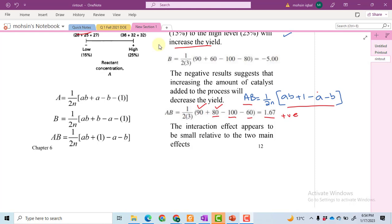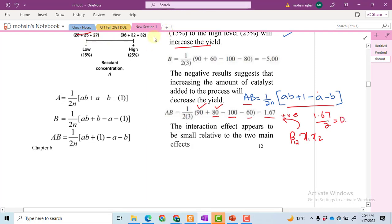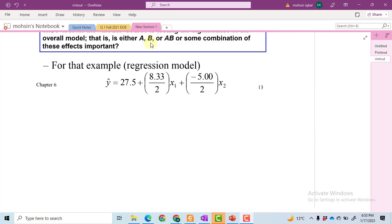The coefficient of the two terms X1X2 in the regression equation with the name B12 will be equal to 1.67 divided by 2, which comes out to be 0.835. Here you can see in the regression model that 8.33 has been divided by 2 and -5 has also been divided by 2 to get the regression coefficient.